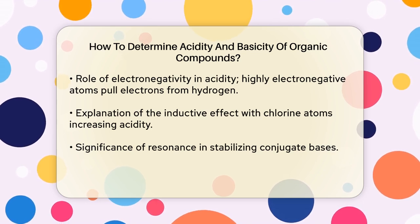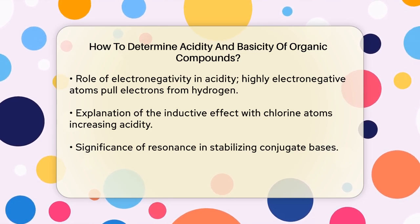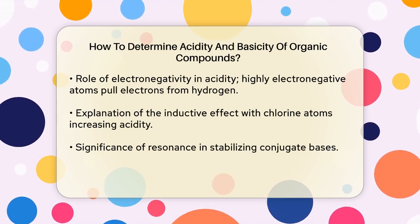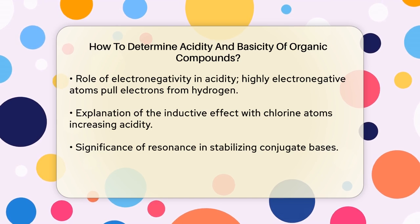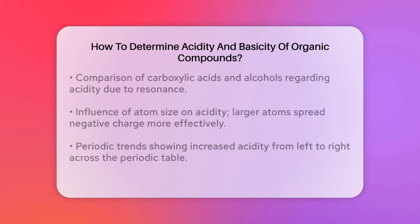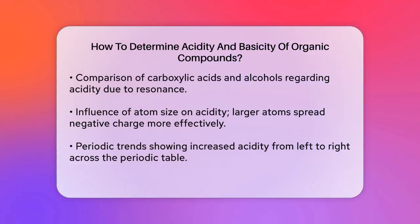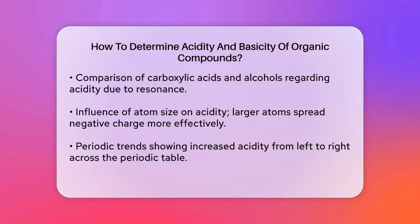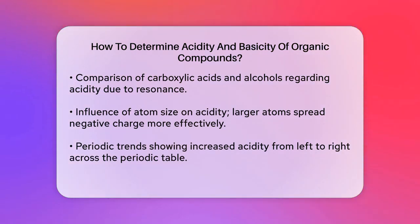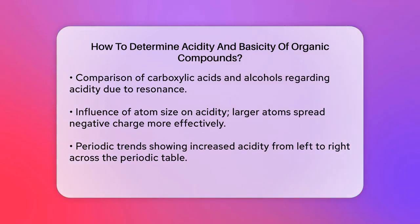Resonance effect. Resonance is another crucial factor. When a conjugate base can delocalize its negative charge over multiple atoms through resonance, it becomes more stable. This is why carboxylic acids are generally more acidic than alcohols. The acetate ion, for example, can delocalize its negative charge over two oxygen atoms, making it a weaker base and thus making acetic acid a stronger acid.